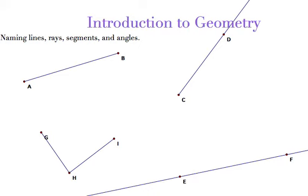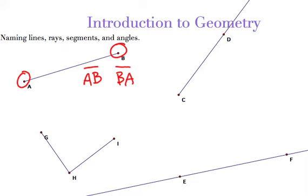The first one we'll start with is AB. AB is a line segment. The reason I know it's a line segment is because it has two endpoints. They're called endpoints because you notice they are points, and there's nothing that goes past them. So I could call this either AB or BA — it doesn't matter which order you go in. The way you show that it's a line segment is you draw a little line up there without any arrows.